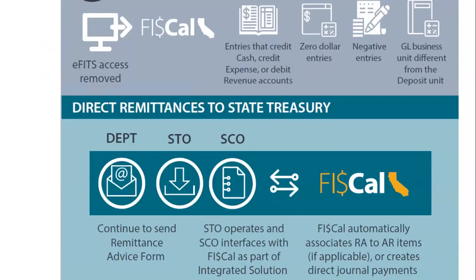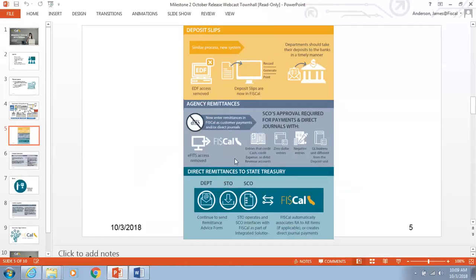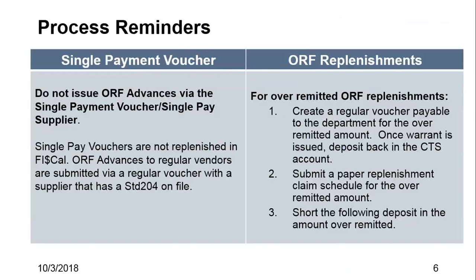Question: I still have last month's eFITs. Can I still eFITs? What is the cutoff date? We'll get into some more specifics about eFITs for our cutover — we've got a section on that a little bit later in the presentation. So we've got some process reminders. There are two big things that departments should keep in mind: single payment vouchers and the ORF for replenishment. We do not want departments to issue ORF advances via single payment voucher. Single pay vouchers are not replenished in FISCAL. ORF advances to regular vendors are submitted via regular voucher to the supplier that has an STD 204 on file.